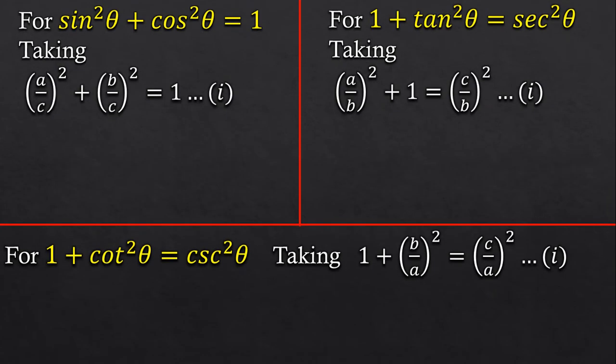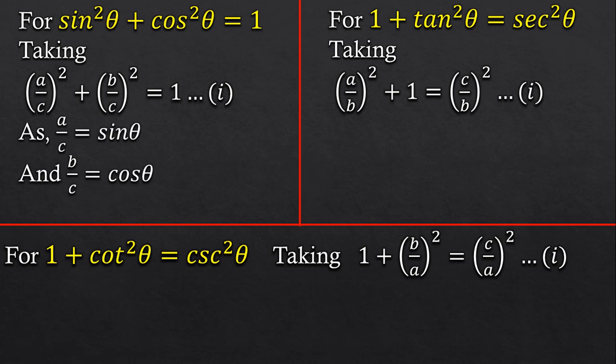Now you will see what I was talking about. So as a by c is equal to sin theta and b by c equals to cos theta, we got the required identity which is sin square theta plus cos square theta equals to 1.